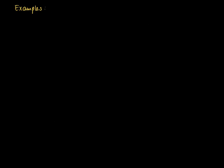I will now show an example of how you can use these algebraic properties of limits to derive some nice results about geometric series. Look at the geometric sequence a_n equals r to the power n minus one, where the absolute value of r is smaller than one. In this case we know that the limit of a_n equals zero.